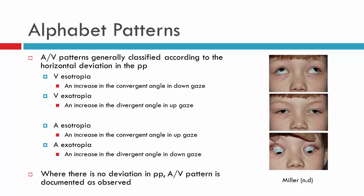If there is no deviation in primary position but you note an AV pattern because there is a difference in the horizontal deviation between up and down gaze, then we can only comment that there is an AV pattern and we won't go to the extent of a further subclassification.